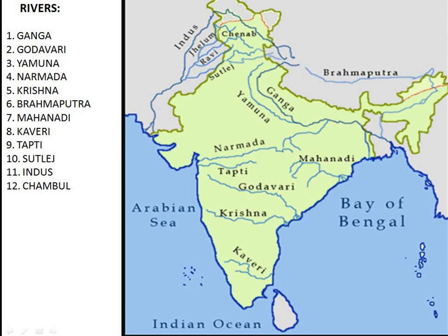This is the map of India. First of all we have to remember this map where the rivers are present. Then we can answer MCQs in an easy way, whether they ask in descending or ascending order, or questions about which river is towards the west side, south side, north side, or east side. If we know the proper map, we can easily answer those types of questions.